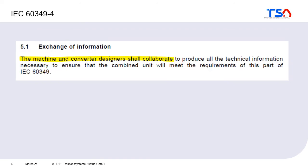One interesting point is that the standard explicitly states that the machine and converter designers shall collaborate. This is important because in the railway industry, motors and inverters are very often produced and designed by different companies — not just different departments. It is therefore critical that the machine fits the converter and vice versa. The standard mandates collaboration at a very early stage so that the machine can meet the requirements.